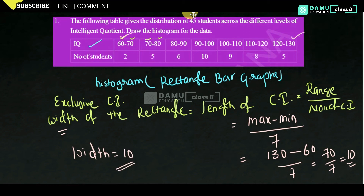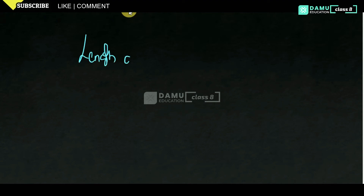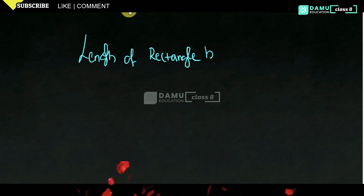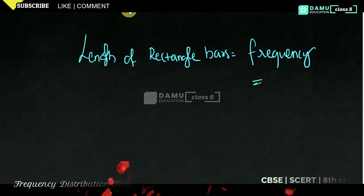Now we know the width. The next thing to find is the length of the rectangular bars. The length of the rectangular bars will be equal to the frequency for the corresponding class interval. So we are going to construct our values on the graph.